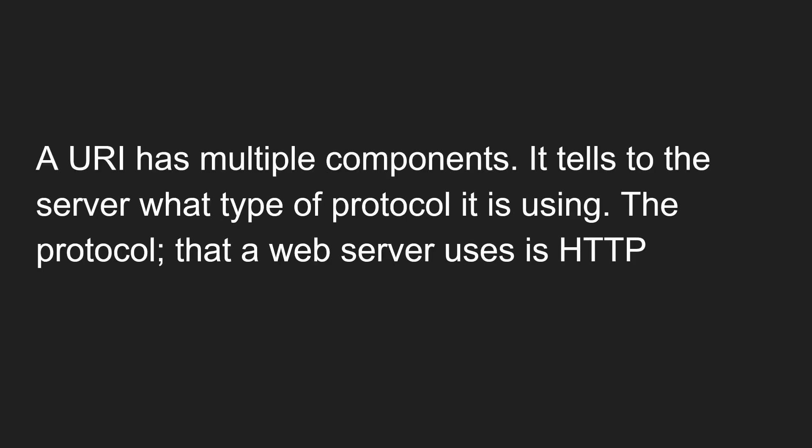A URI has multiple components. Let's dissect them one by one. The first component tells the server what type of protocol is being used. In a URI, there is a lot of information involved. The first piece of information is the protocol — the protocol that a web server typically uses is HTTP.